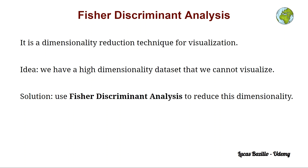The idea is that we have a very high dimensionality dataset that we are not able to visualize — a dataset of lots of features, lots of variables, and lots of attributes. We cannot visualize this high dimensionality dataset. The solution is to use Fisher Discriminant Analysis to reduce this high dimensionality, and with this we will be able to visualize the dataset and the relation between those attributes.